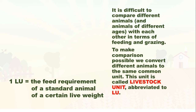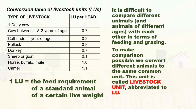One LU, or one livestock unit, equals the feed requirement of a standard animal of a certain live weight. Here is an example of a conversion table of livestock units. One of the unique features of the industry would be in eggs, meat, milk, and breeding — all of this to address shortage in food supply or farming income.